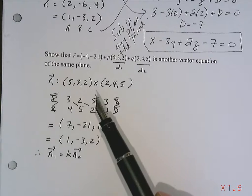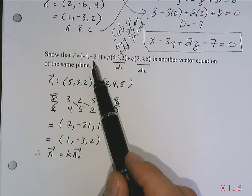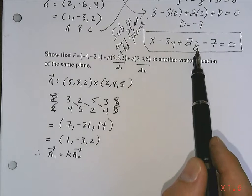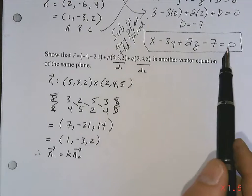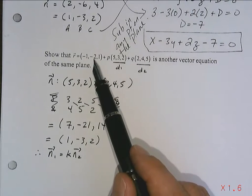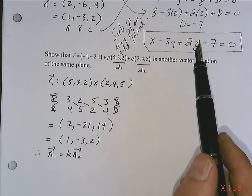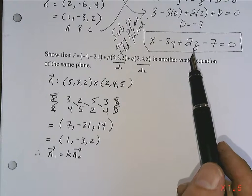I could take this point, plug it into x, y, and z, and see if left-hand side equals right-hand side. Because if this point satisfies this equation, then it lies on this plane. That's pretty easy. I like that.